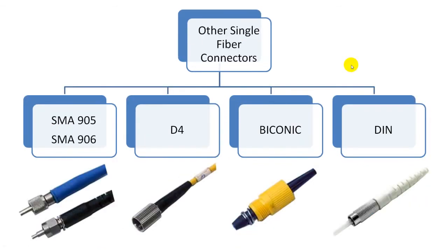There are some legacy single fiber connectors available too. The most common are the SMA connectors, which were developed by Amphenol. SMA stands for Sub-Miniature version A. It has a 3.14mm ferrule. The difference between SMA905 and SMA906 is that the SMA906 connector's ferrule has a step, while the SMA905 is a full complete ferrule with no steps. SMA connectors are most commonly used in medical and industrial applications. Some other non-obsolete connectors include D4 and Biconic.